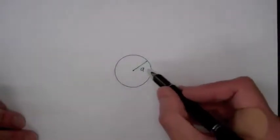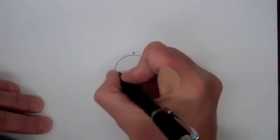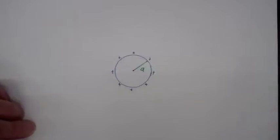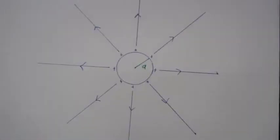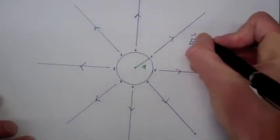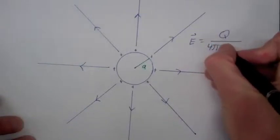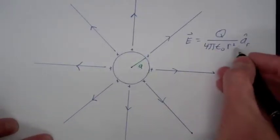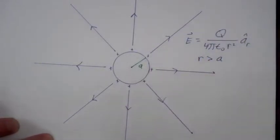Let's determine the capacitance of an isolated sphere of radius A. The way we do this is we put some charge q on the sphere. Because of the spherical symmetry, we know the electric field intensity will radiate out in the radial direction from this sphere. The electric field intensity will be equal to the total charge on the sphere divided by four pi epsilon sub zero r squared, in the a sub r direction. This is valid for r greater than A, because for r less than A there is no electric field intensity.